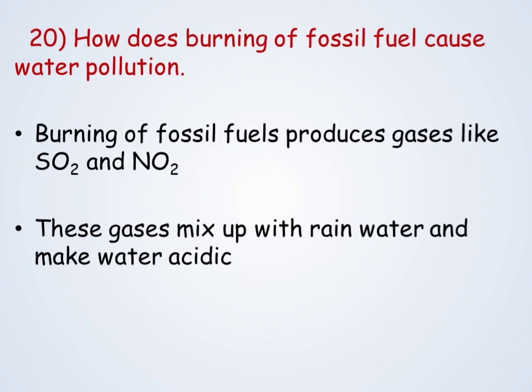How does the burning of fossil fuels cause water pollution? During burning of fossil fuels, it produces harmful gases like sulfur dioxide and nitrogen dioxide. These gases mix with rainwater and make the rain water acidic. This is called acid rain. Hence it causes water pollution.